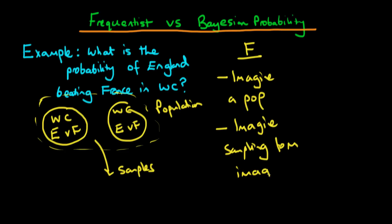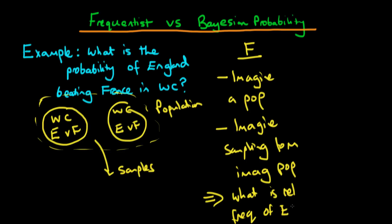So that's even one step further removed. And then only then, what we would need to do is count up what is the relative frequency of England victories — the relative frequency of England wins. And that would be the frequentist interpretation of what is the probability of England beating France in a World Cup.